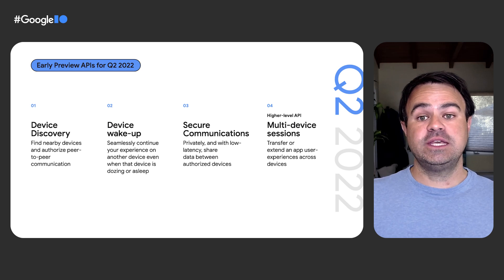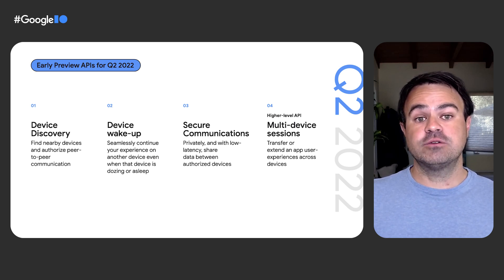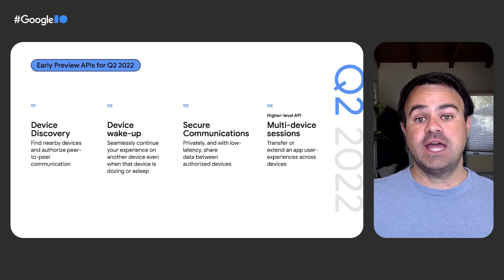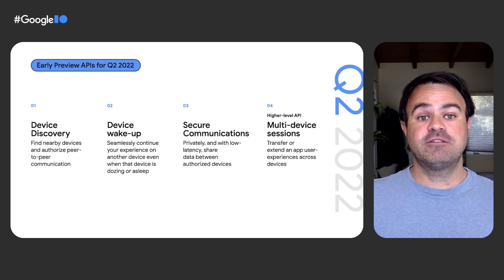When talking to developers about these types of experiences, the recurrent themes we heard were challenges with discovering what devices are around them, reducing friction and authorizing those devices to participate in an experience, and establishing secure, private, reliable, and performant connections between devices. In addition to addressing those issues, we are also providing another abstraction that simplifies moving an experience between devices and managing those that span multiple devices.